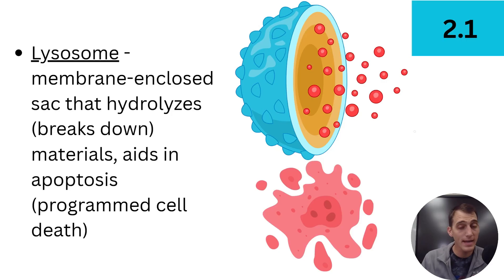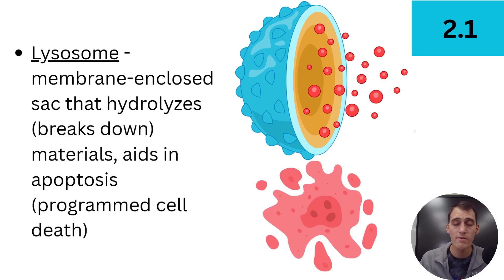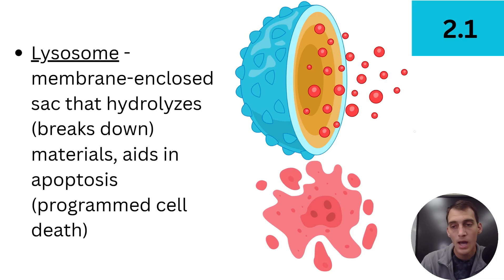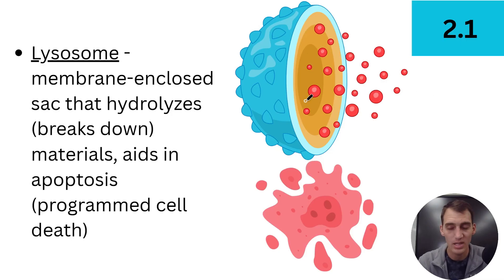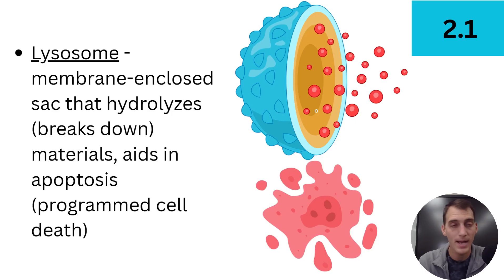In fact, the lysosome is so good at breaking stuff down that when a cell has to die — and we'll talk about circumstances under which cells die in Unit 4 — it goes through something called apoptosis. Apoptosis is when a cell self-destructs after receiving a signal to do so. Almost all cellular materials are broken down by the enzymes within the lysosome. The lysosome kind of goes crazy when the cell has to die, and that process is called apoptosis. We'll come back to that in Unit 4.